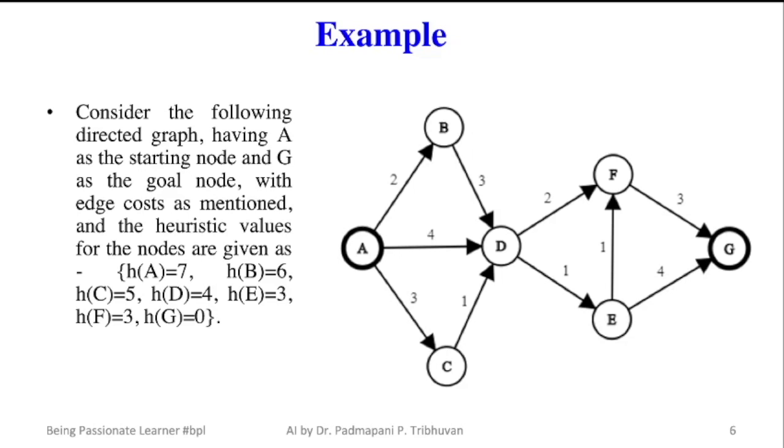Remember that for goal state heuristic value is always 0 as it is estimated cost from a goal node to goal node. If you don't know what are heuristic functions,